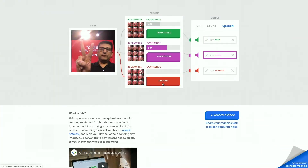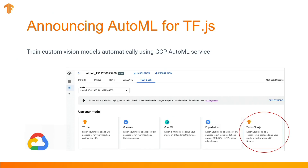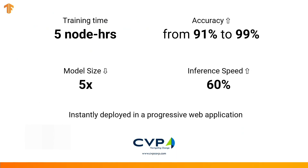In addition to using pre-trained models out of the box, often you need to train a custom model for your application on your own data, and this can be pretty challenging. Google has a service called AutoML which lets you bring your data to Google Cloud and train a custom model. These models are optimized for your problem, they give excellent accuracy and performance, and then they are ready for deployment. We are really excited to announce that we now have integration of TensorFlow.js with this AutoML service.